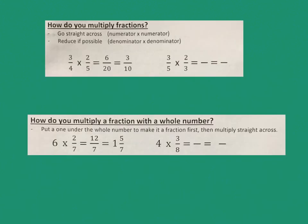The first thing we're going to look at is how do you multiply with fractions? The rule is you simply go straight across — multiply the numerator times the numerator, and then the denominator times the denominator. Also, when you finish, you should check to see if you could reduce or simplify your answer. I'm going to do the numerator times the numerator, and then the denominator times the denominator.